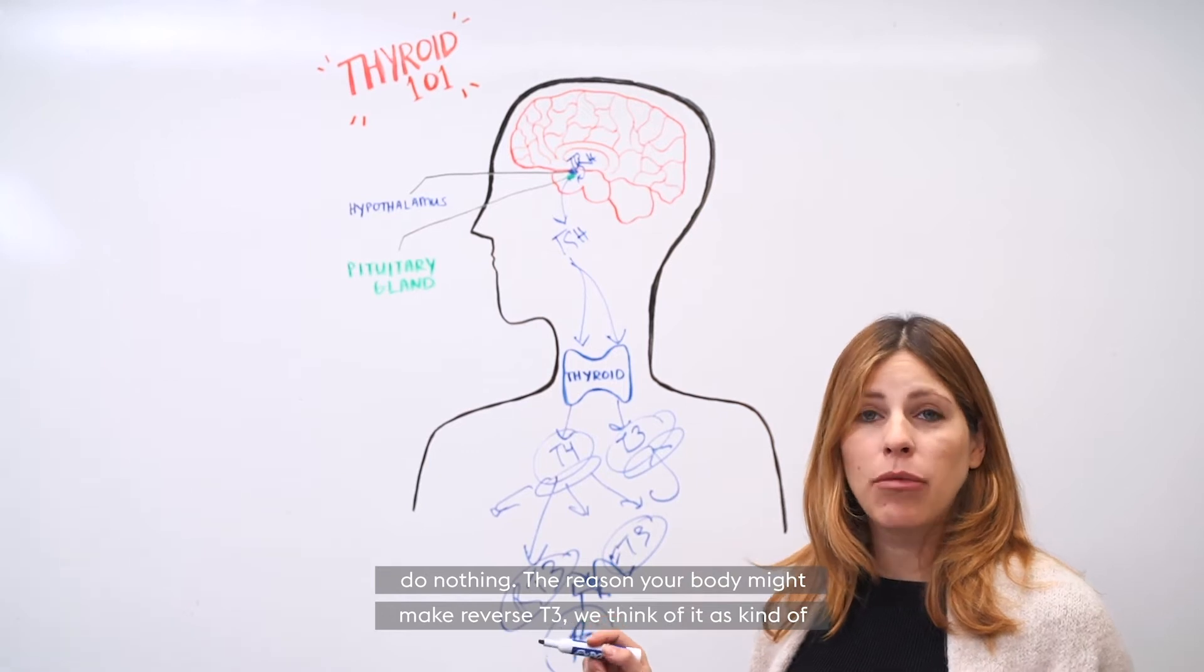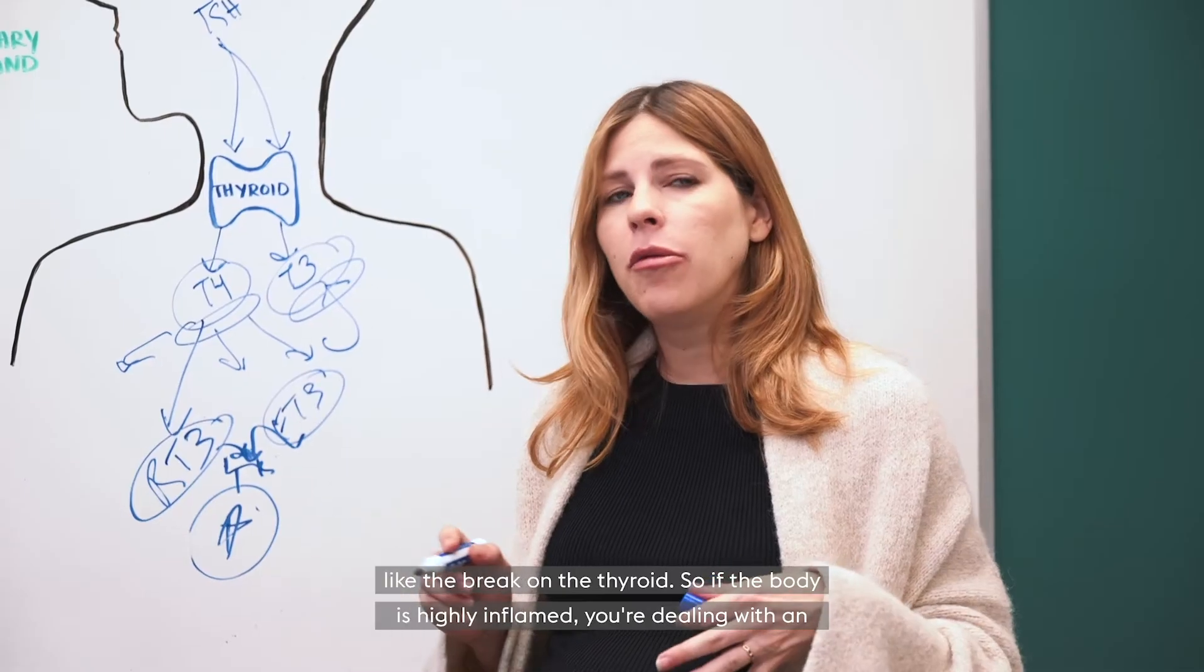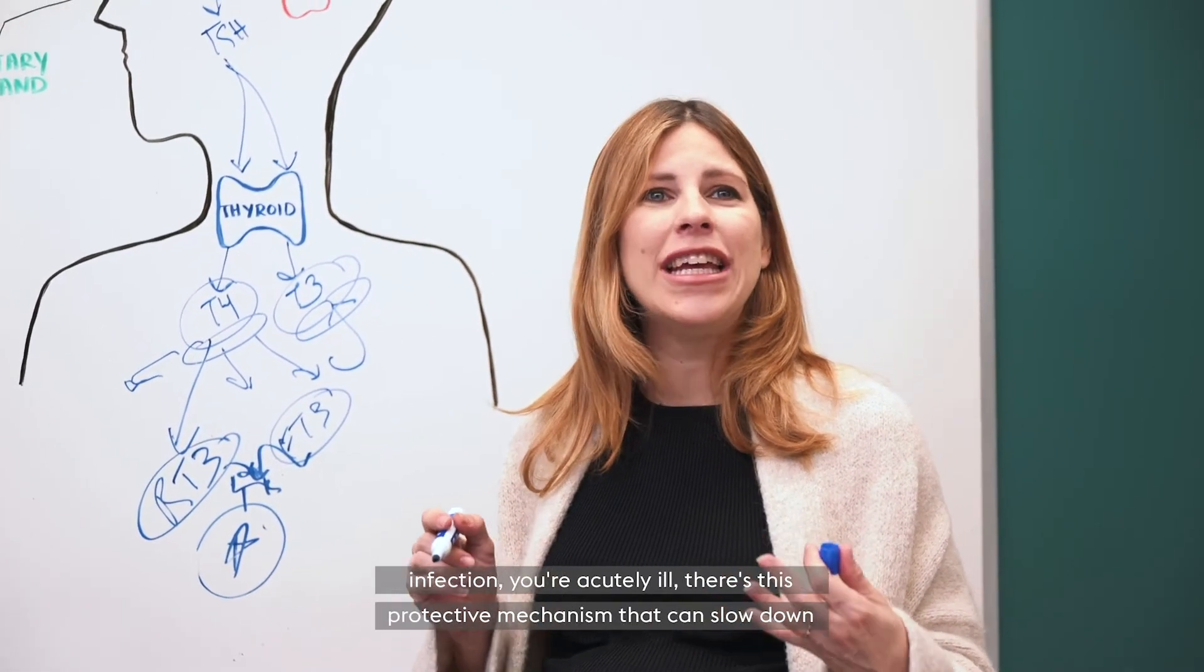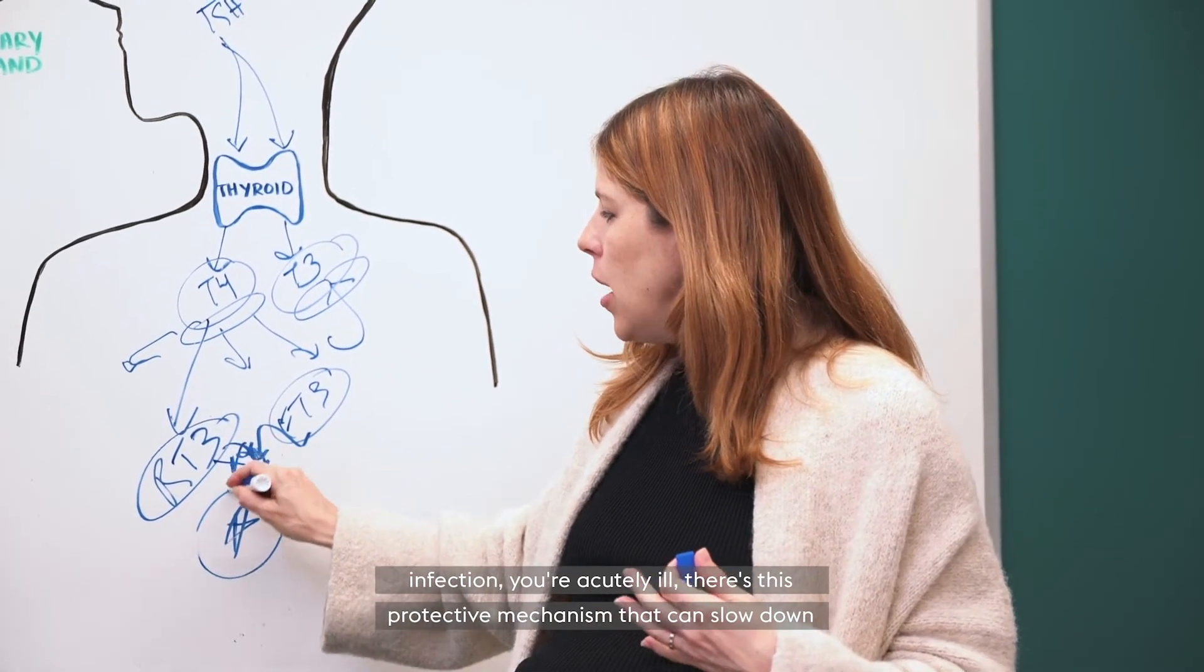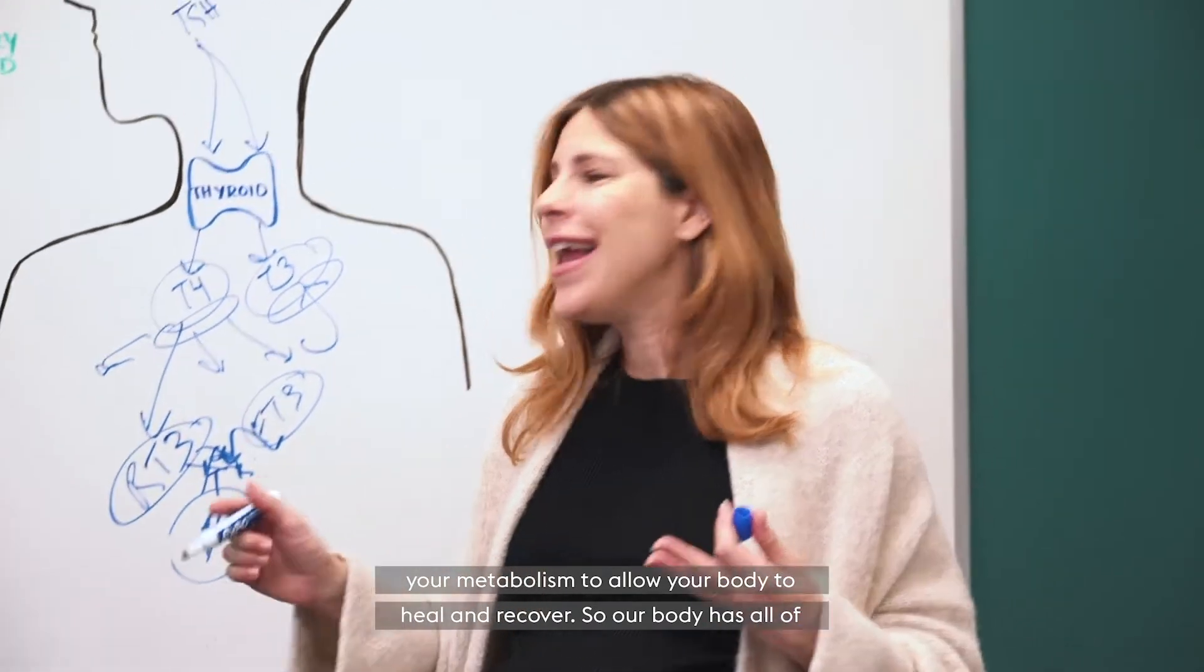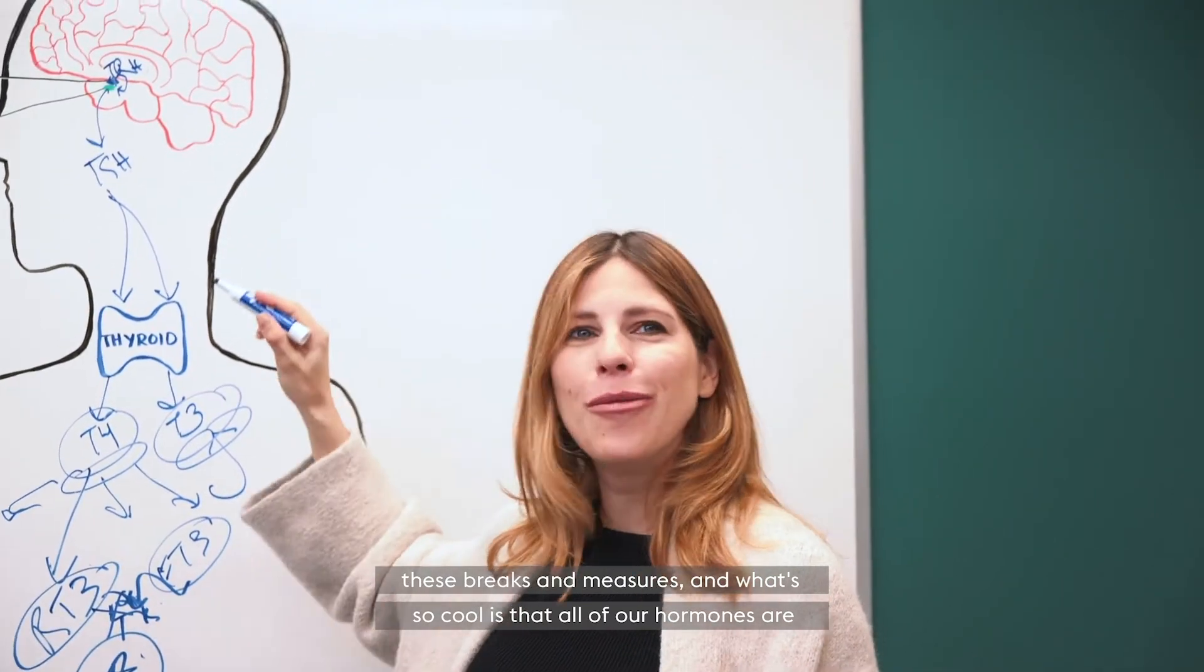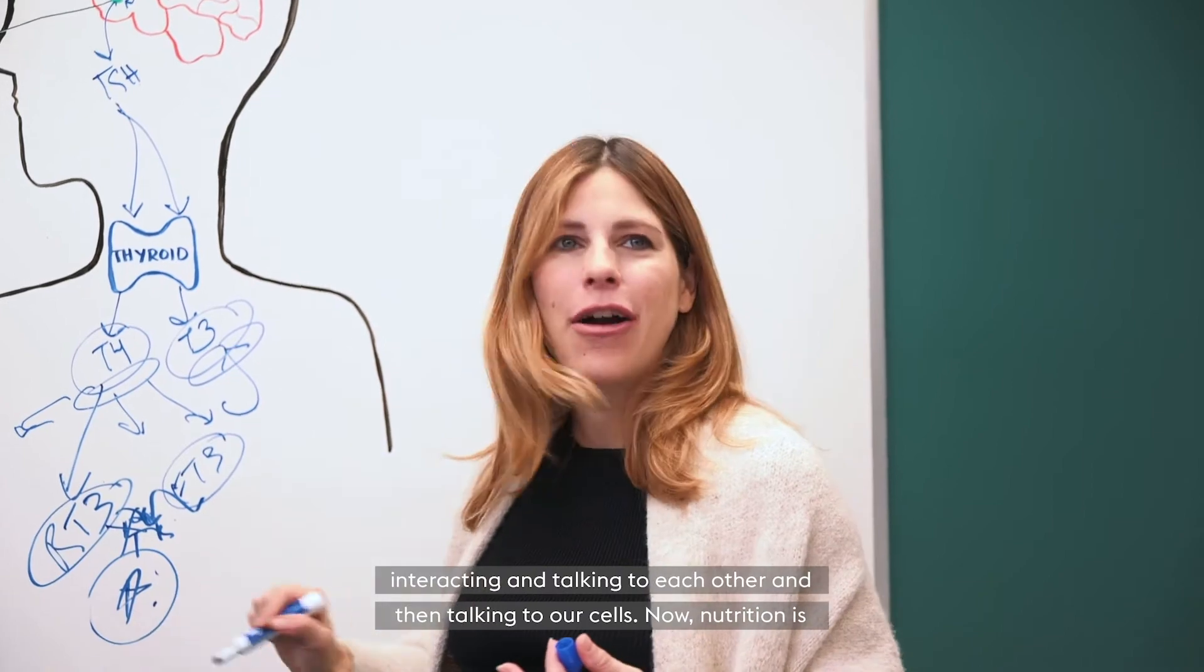And the reason your body might make reverse T3, we think of it as kind of like the brake on the thyroid. So if the body is highly inflamed, you're dealing with an infection, you're acutely ill, there's this protective mechanism that can slow down your metabolism to allow your body to heal and recover. So our body has all of these brakes and measures. And what's so cool is that all of our hormones are interacting and talking to each other and then talking to our cells.